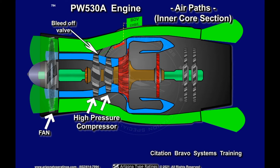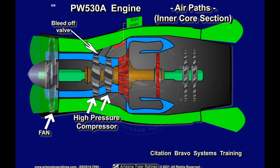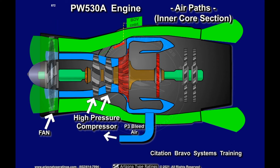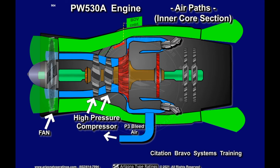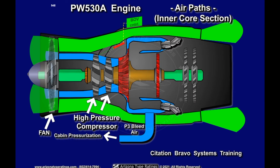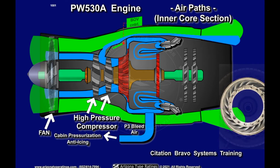Ingested air is next compressed further by the centrifugal compressor before entering the combustion chamber. A small amount of this compressed bleed air, known as P3 bleed air, is used for several non-engine-related functions, such as cabin pressurization and anti-icing.